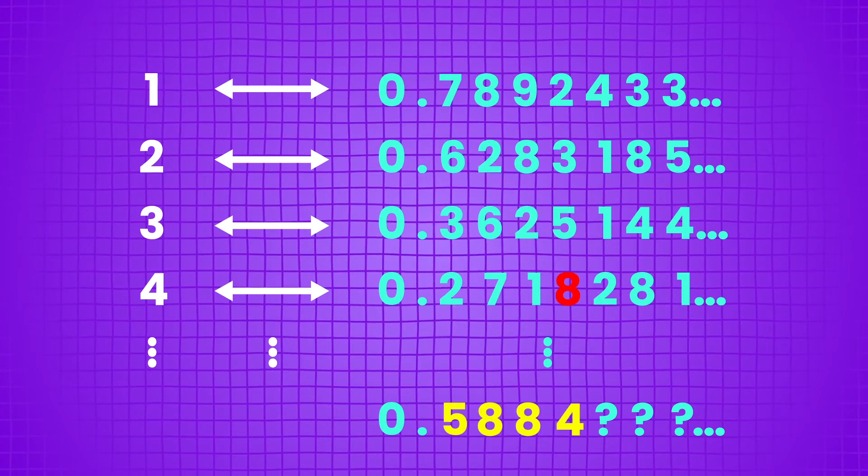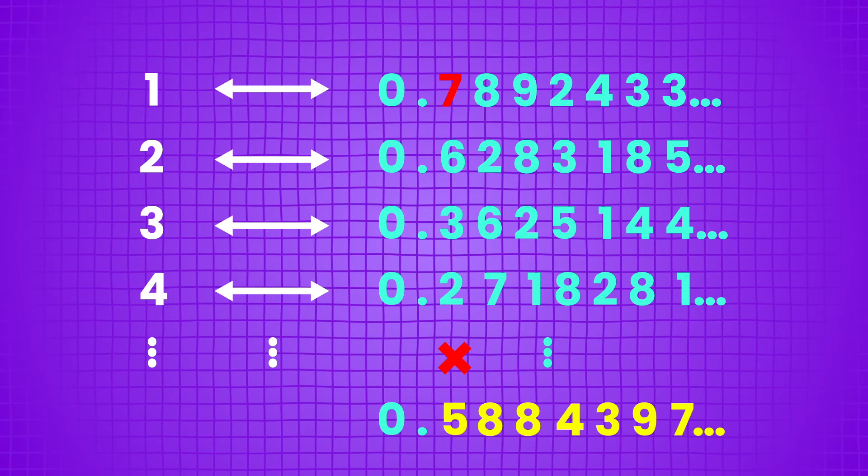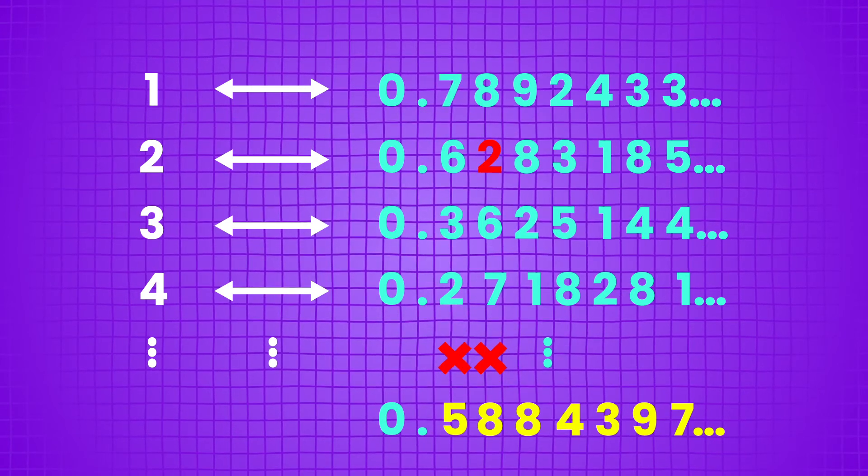If you keep on doing this, you'll have a new decimal that disagrees with the first decimal in the first place, second in the second place, and so on.